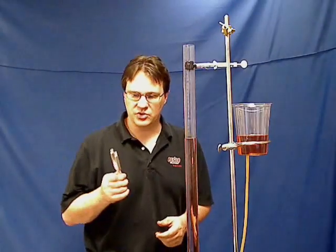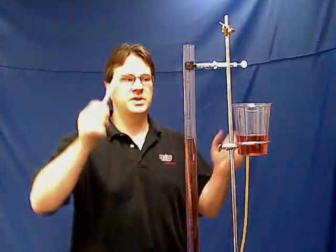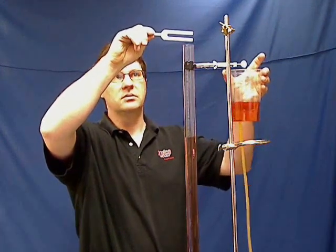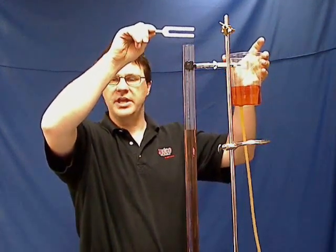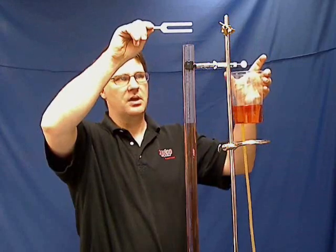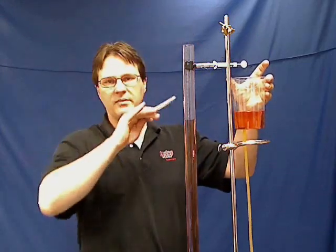Have the student strike a tuning fork and hold it over the top of the resonance tube, then raise the water level until they hear a loud resonance tone. That's cutting the wavelength off at a node.